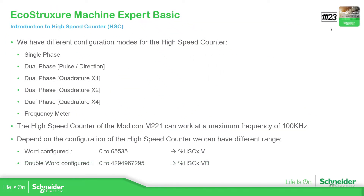Inside EcoStruxure Machine Expert Basic, we have the high-speed counter — HSC, which stands for high-speed counter — and there are different configurations. We have single-phase, which requires only one fast input, and then we have dual-phase, which can be used for encoders. We also have the frequency meter to read frequency.